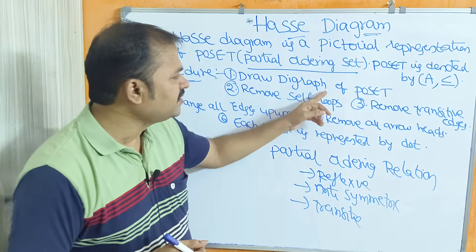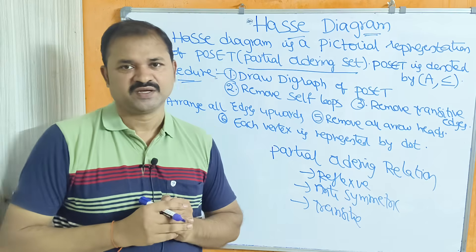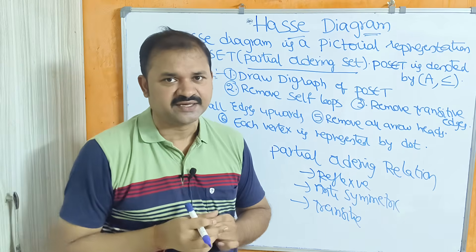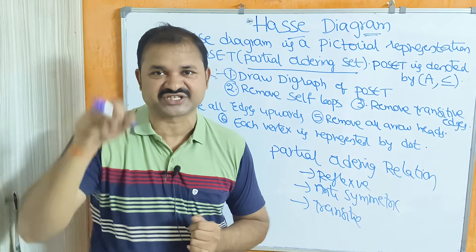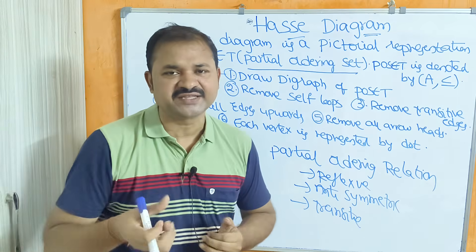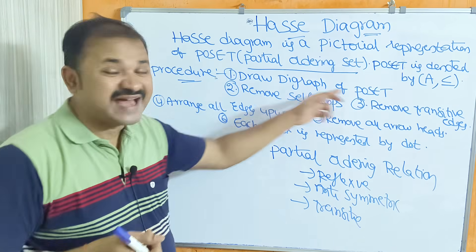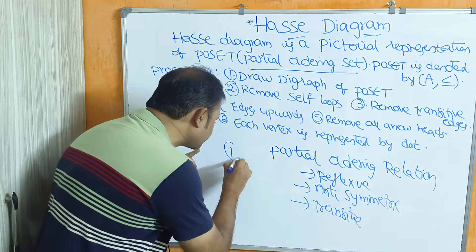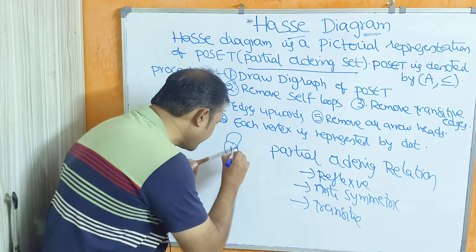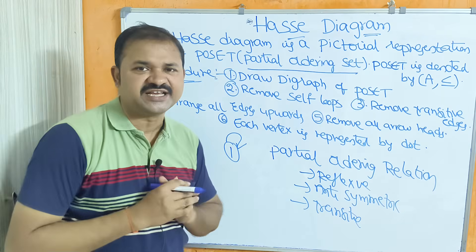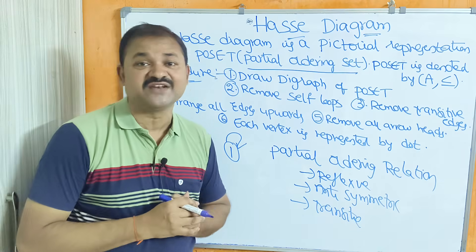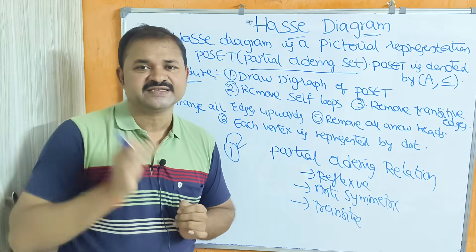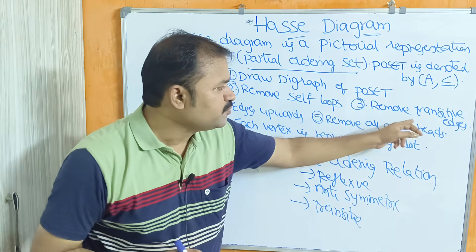Step one: draw a digraph for the poset. Digraph means directed graph — a graph that contains edges with directions or arrows. Step two: remove self loops. A self loop is where the source vertex and destination vertex are the same. We need to remove the self loops because the Hasse diagram does not contain self loops.